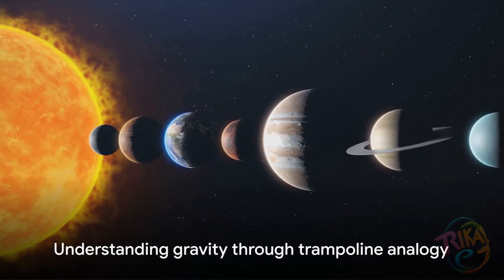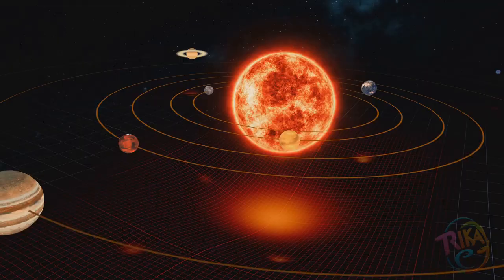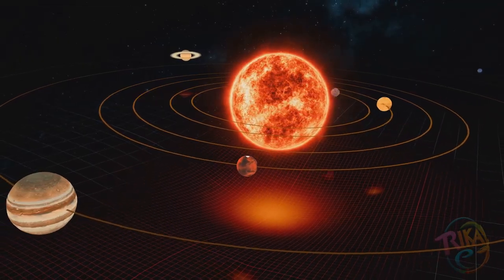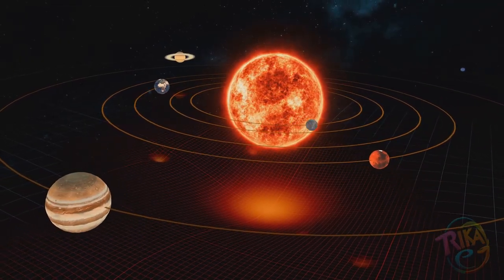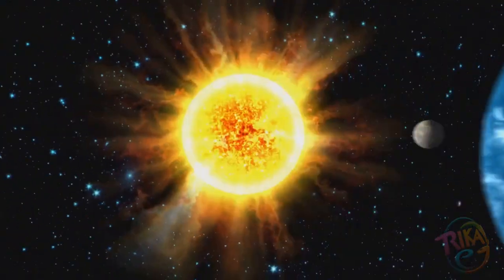This is a simplistic way of understanding how gravity works on a larger scale. The Sun, much like that bowling ball, creates a dimple or well in the fabric of space-time, and the Earth, like the marble, is pulled towards it.